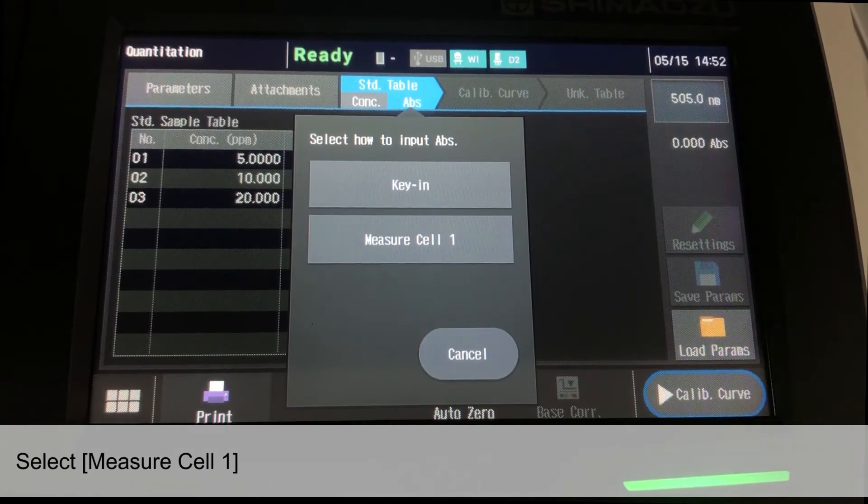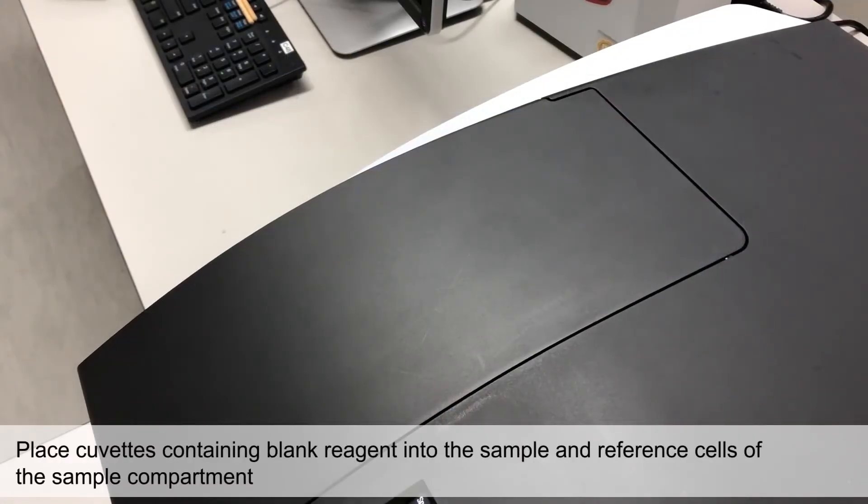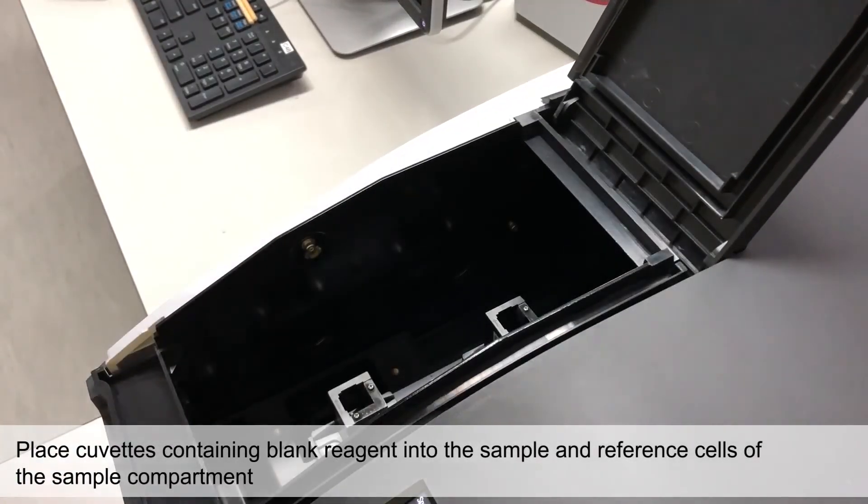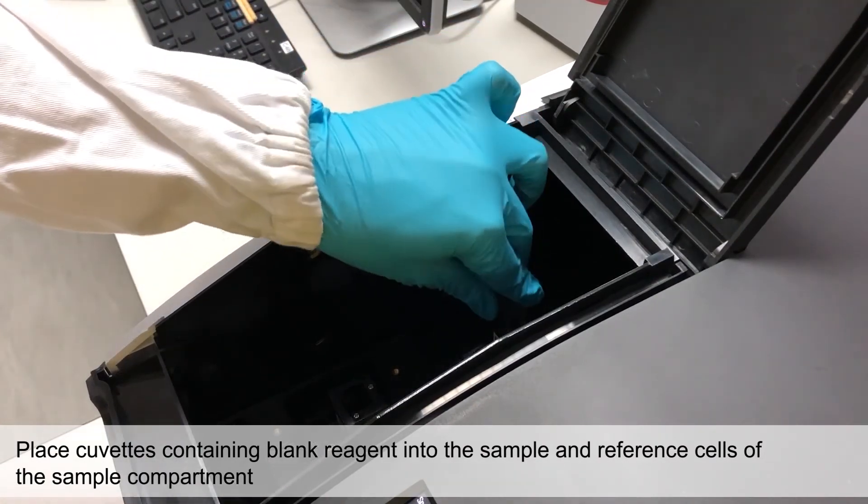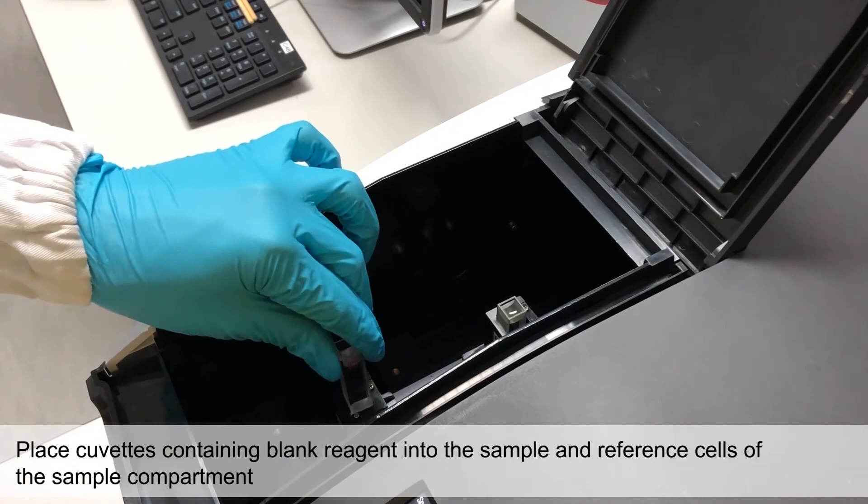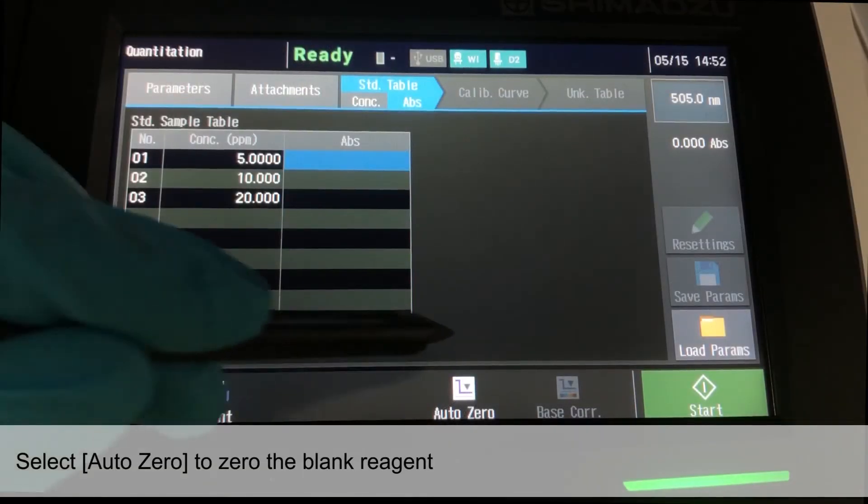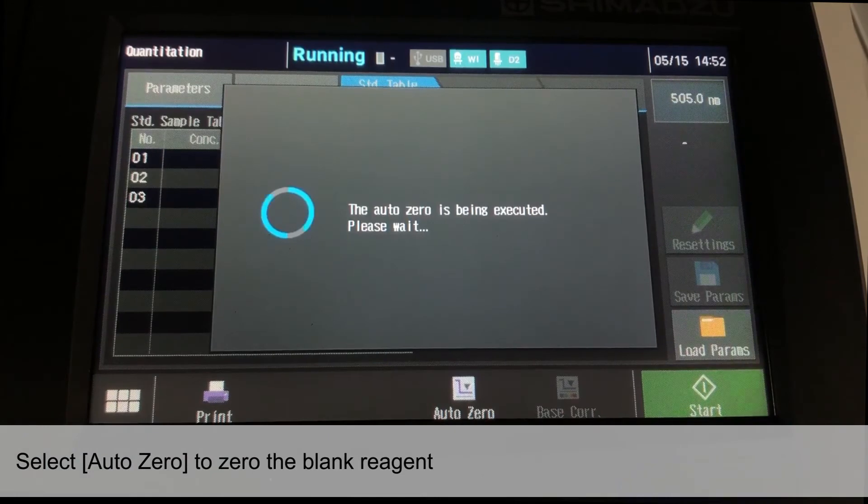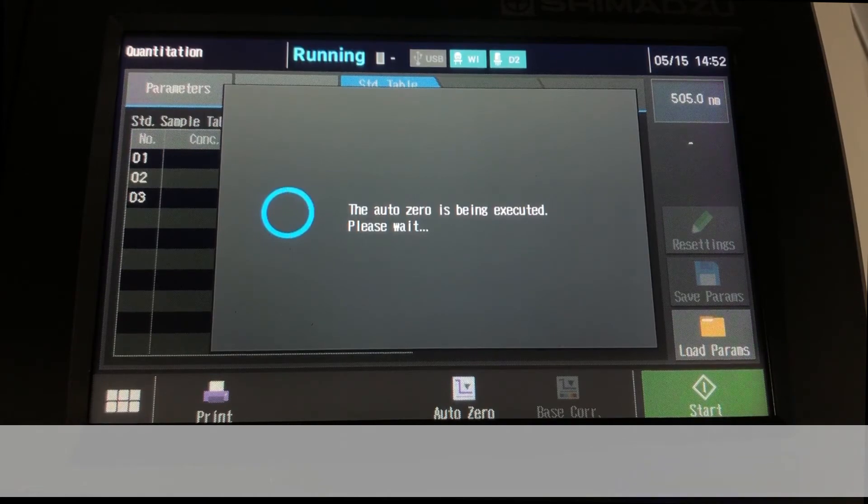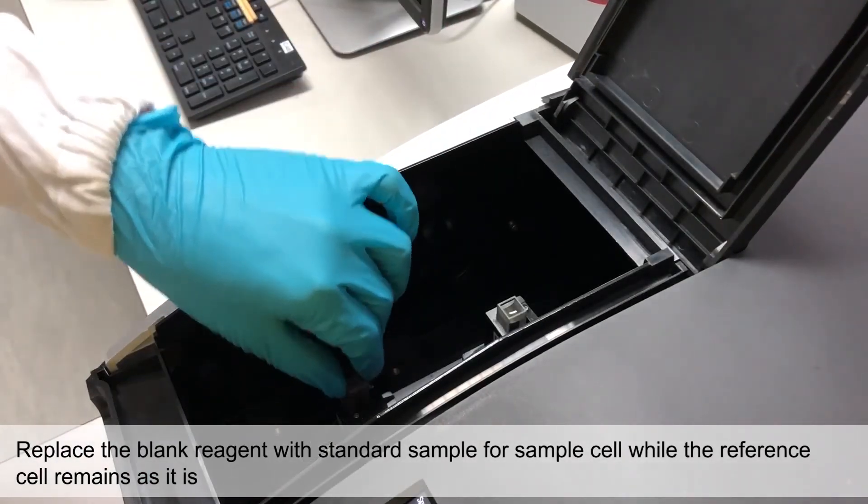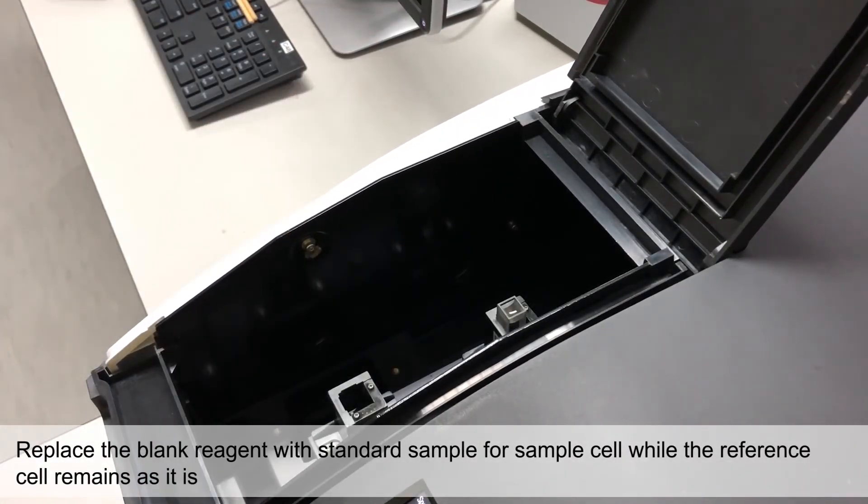Select Measure Cell 1 for Standard Sample Absorbance Reading. Now, place the cuvette containing blank reagent into both sample and reference cells of the sample compartment. Select Auto 0 to zero the blank reagent. Once finished, replace the blank reagent with the Standard Sample for the sample cell.